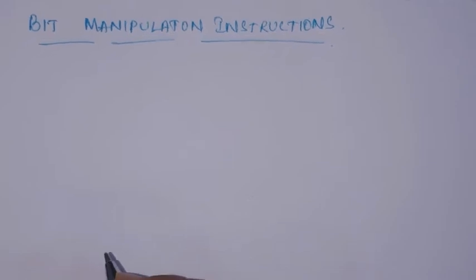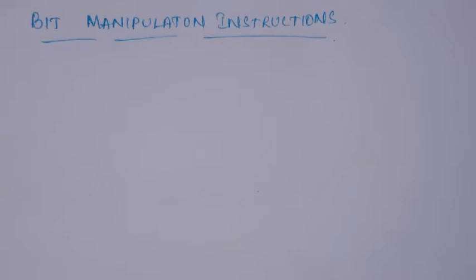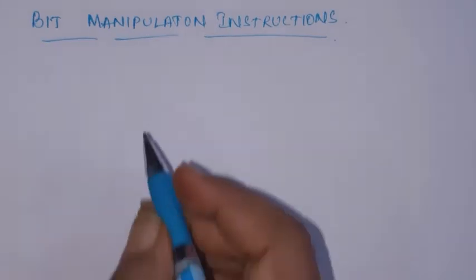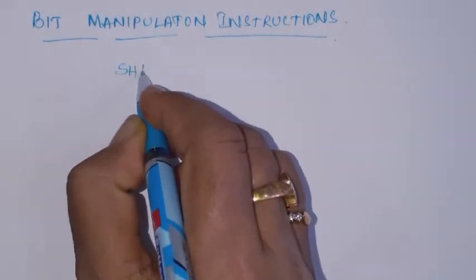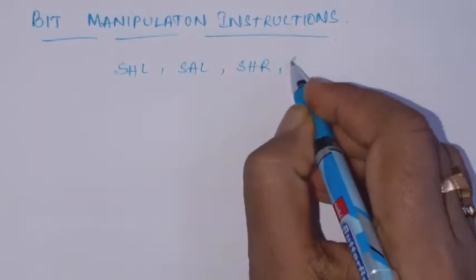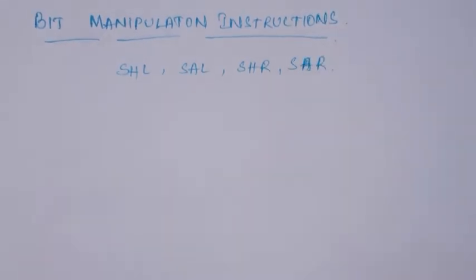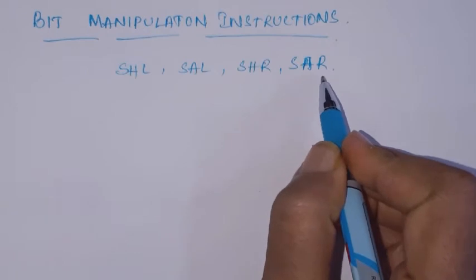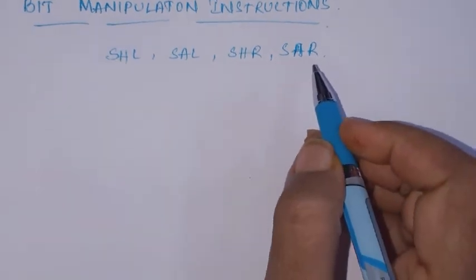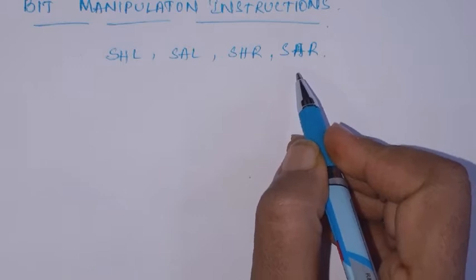Hello students. Let's see bit manipulation instructions. In the 8086 instruction set there are a set of bit manipulation instructions like SHL, SAL, SHR, and SAR — shift left and shift right. These are the shift instructions which shift the bits towards left or right depending on the instruction.